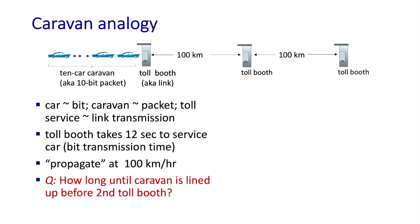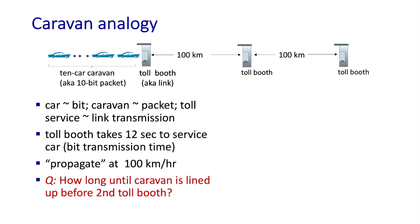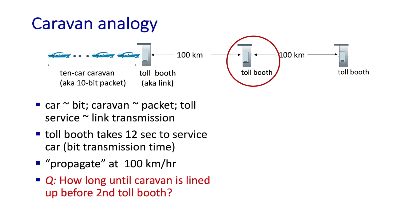A real-world analogy might help here. Let's consider a caravan of cars. Cars are the bits, the caravan is a packet, and taking a toll and passing a car through a toll booth is like transmitting a bit. A car then drives — that is to say, propagates — onto the next toll booth. The question we want to ask is: how long until the last car of the caravan leaves the first toll booth before the entire caravan is lined up before the second toll booth?